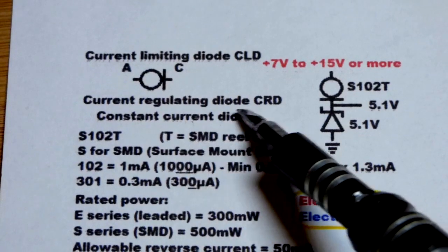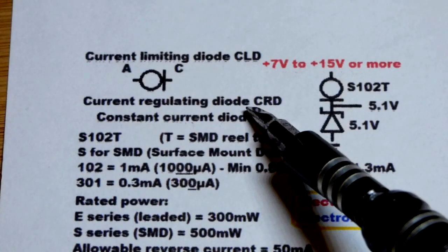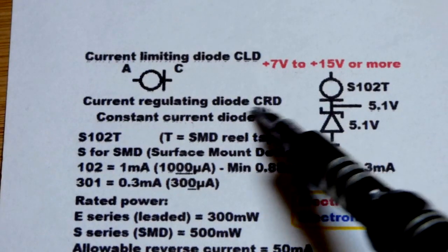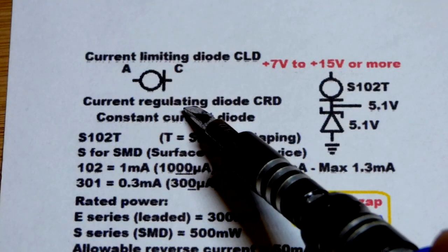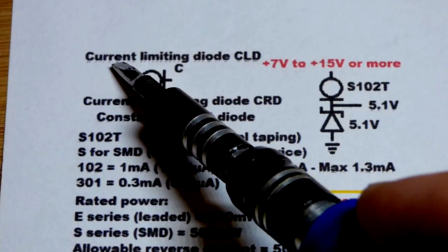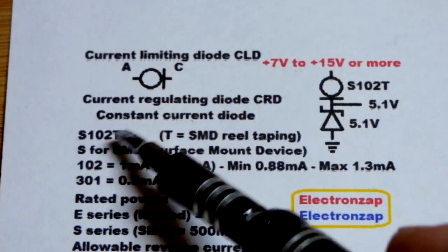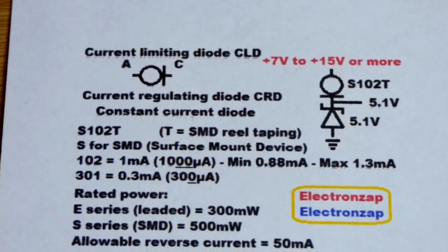Current regulator diode, I think, is the best name for it. And so CRD, I wrote current regulating, sometimes you might see that too. But in any case, you might hear it referred to as a current limiting diode, CLD, or a constant current diode.